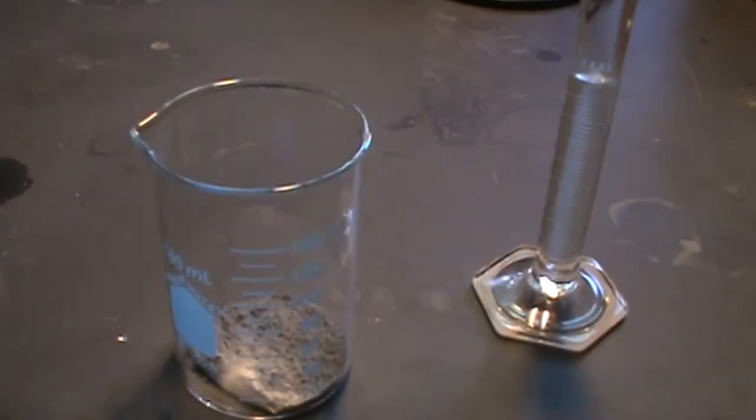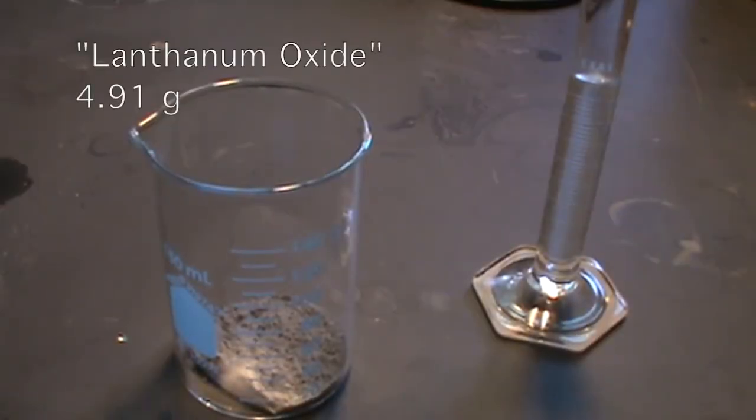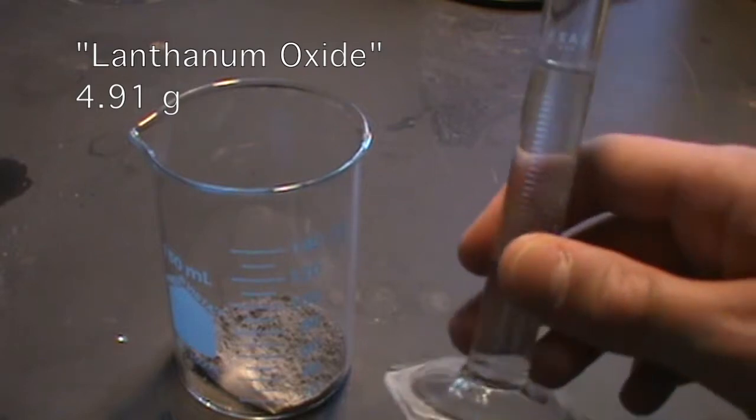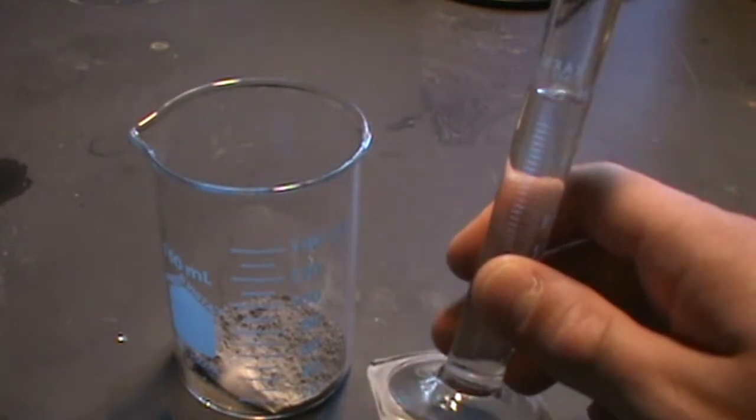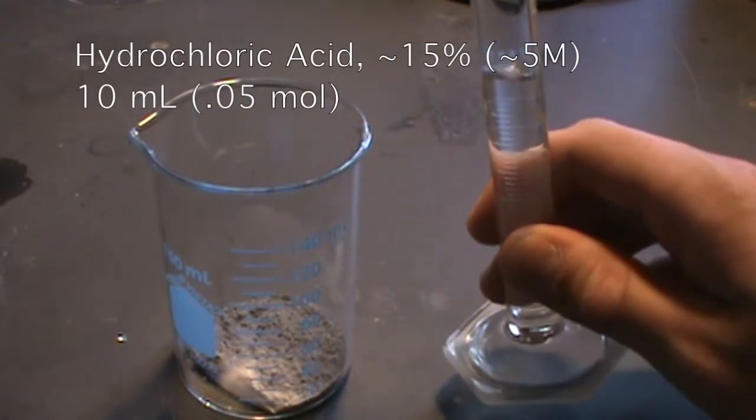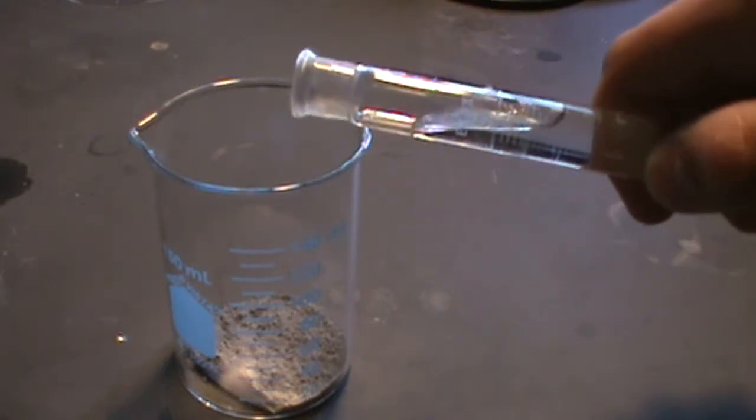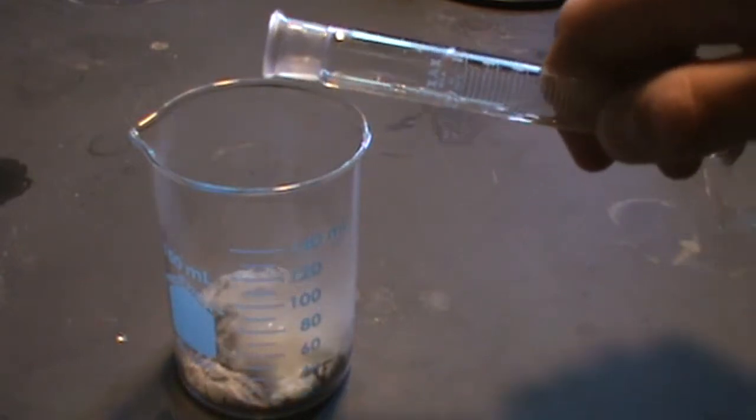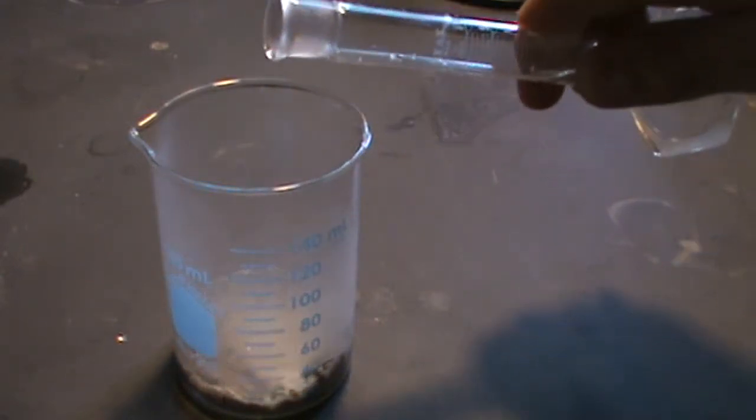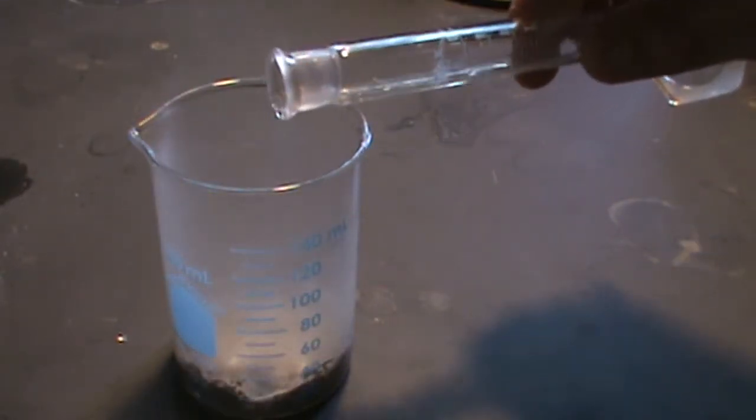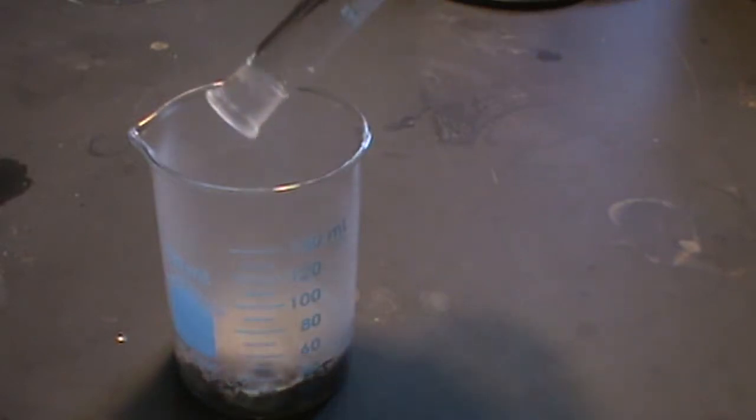First, the impure lanthanum oxide is added to a beaker, then 10 milliliters of 15% hydrochloric acid are added to it. There's an immediate hissing and bubbling, showing that there is some carbonate in this mixture, not just oxides.